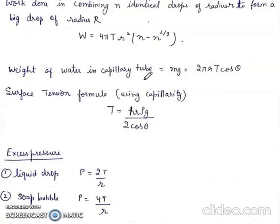Weight of water in capillary tube is mg which is 2 pi r T cos theta. The formula of surface tension using capillarity will be T is equal to H r rho g upon 2 cos theta.